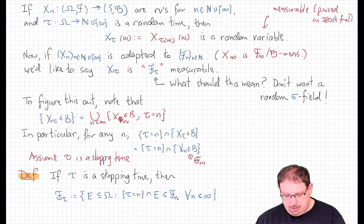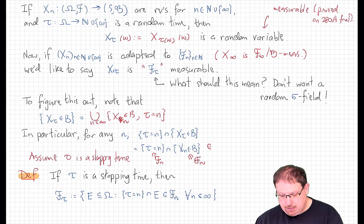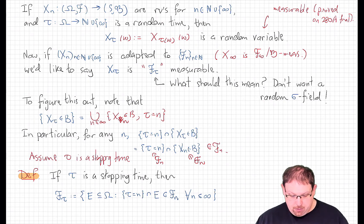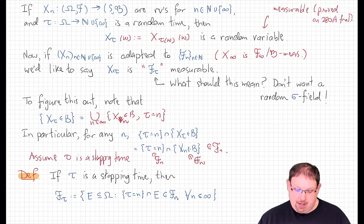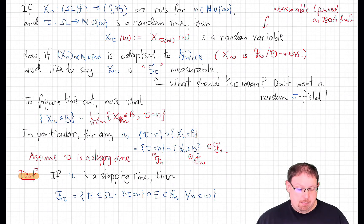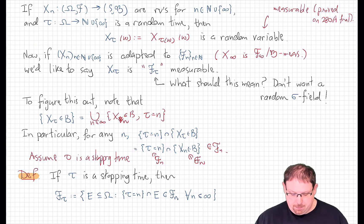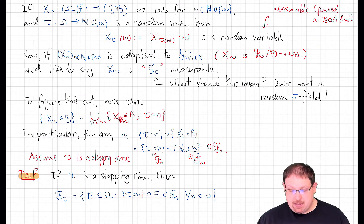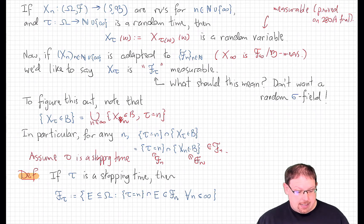In that case, this is also in F_n, and so we see that this is in F_n. What we have in general is that this will be a union of events indexed by n, each of which is in F_n. In particular, this will be in F_infinity, but that's not the strongest statement we want to make. So that's going to be our definition, provisionally, of F_tau. If tau is a stopping time, then F_tau is defined to be the set of all subsets of the probability space which, when intersected with the event that tau takes the value n, gives an event in F_n, for each n less than or equal to infinity.